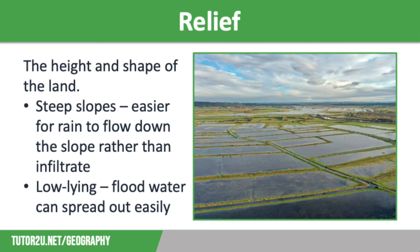Our second physical factor that increases the risk of flooding is relief. This refers to the height and shape of the land, and it has a big impact on flood risk. Steep slopes increase the likelihood of flooding because it is easier for rainfall to flow down the slopes as surface runoff rather than to infiltrate the soil — the steeper the valley, the more likely it is to flood. Low-lying areas also have a high flood risk, as water can spread out easily over a large area but the gradient is too flat to enable water to move out quickly. A good example is the Somerset Levels flooding in winter 2013 to 2014, where excess water had to be pumped out, as you can see on the screen.